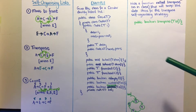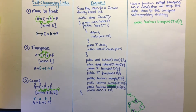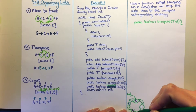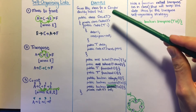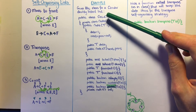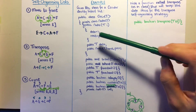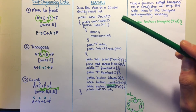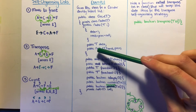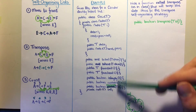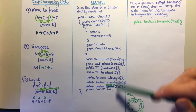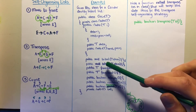Now we'll look at a quick programming example of the transpose method for a self-organizing list. We are given a circular doubly linked list class of a template type. The private node has data, next, and previous pointers, and the public section exposes T data and next/previous node pointers.